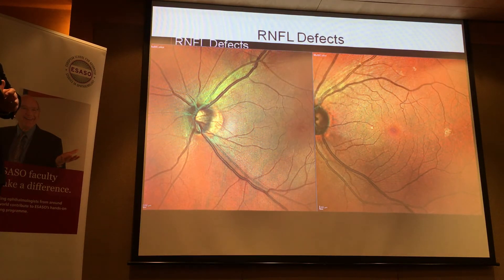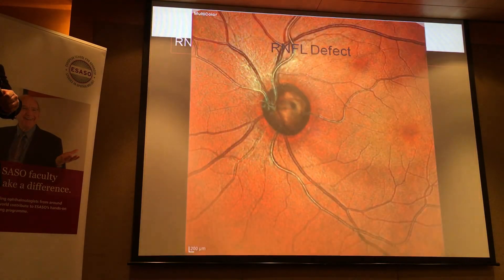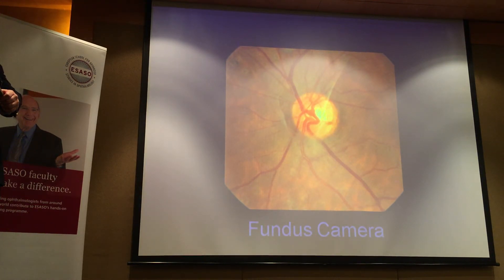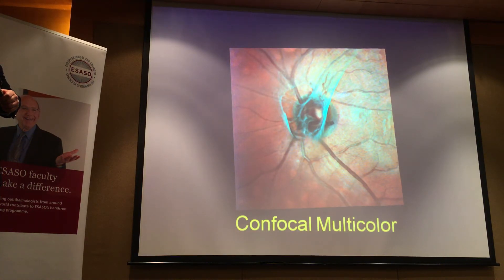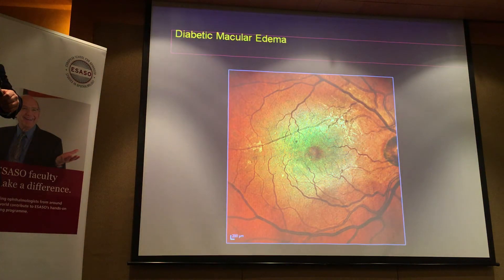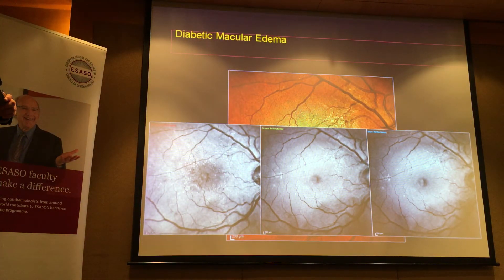For glaucoma — so they don't feel left out — you can actually see nerve fiber layer defects on multicolour, particularly on the red-free and green channels. For diabetic maculopathy, the macula appears greenish and you can see the microaneurysms. OCT comes in helpful here too — you can see the different layers, but notice some hemorrhages appear blocked, especially on the blue channel.